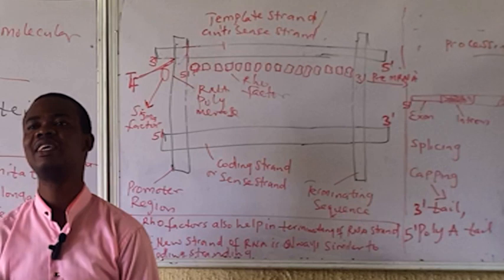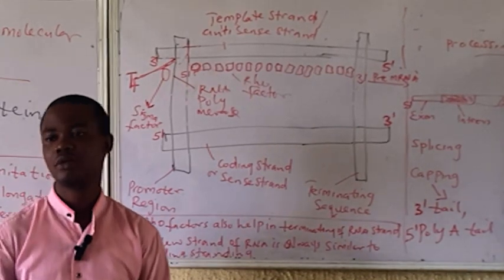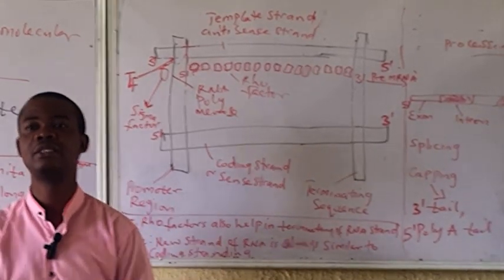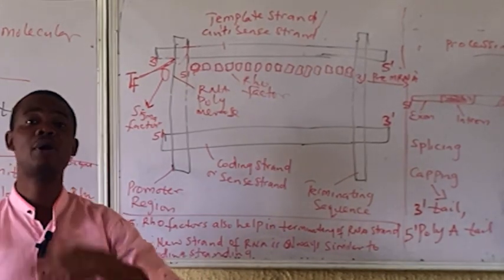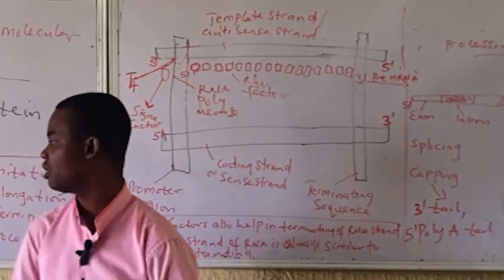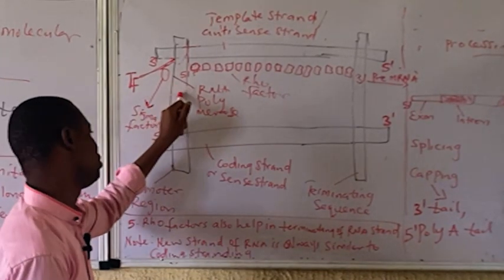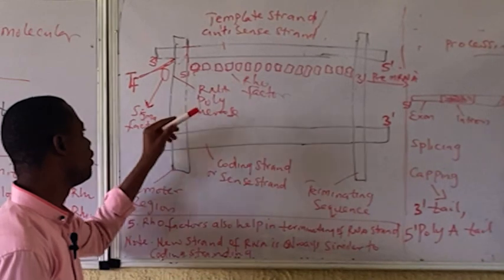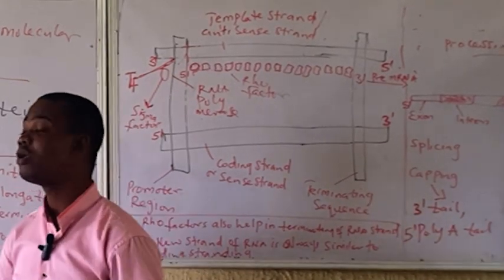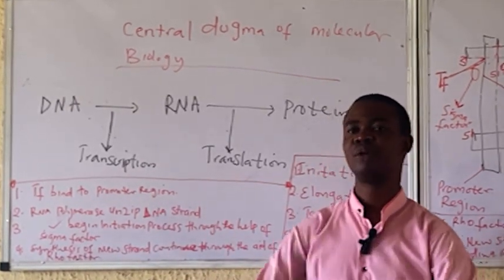RNA polymerase is the enzyme that helps to synthesize RNA from DNA. When we looked at DNA replication, the enzyme that helps produce new DNA strands is DNA polymerase. But here, what we are about to produce is RNA, so the enzyme is called RNA polymerase. When the transcription factor binds to the promoter region, it initiates the recruitment of RNA polymerase, which will then unwind and unzip the DNA strands.